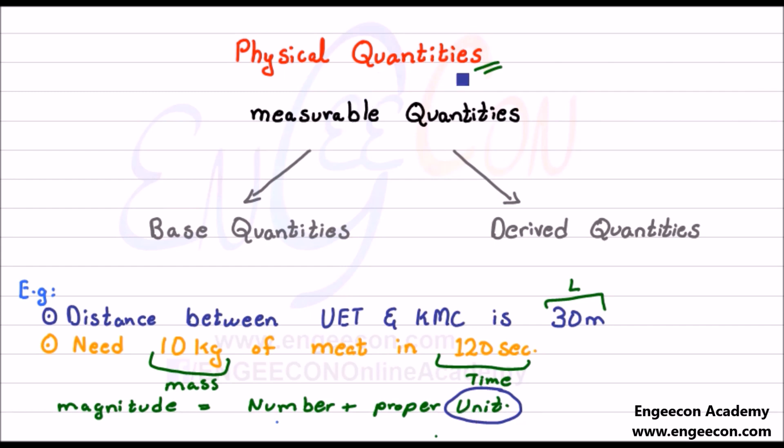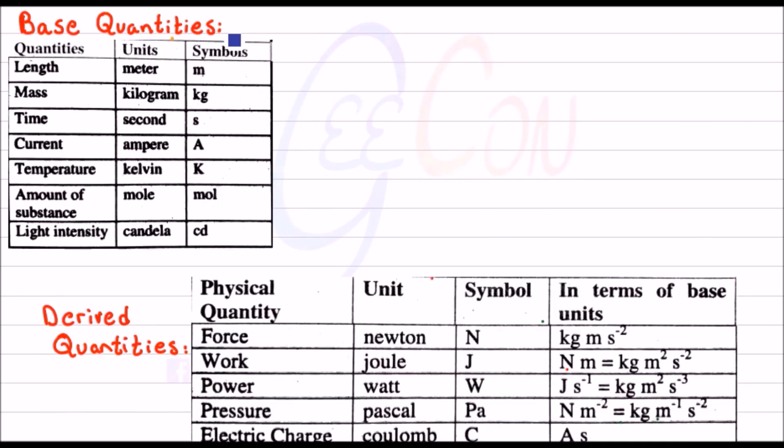Physical quantities are further divided into two categories as base quantities and derived quantities. So let's explain them in detail. Here we have a table of base quantities. You have to memorize this table. Sometimes they ask about these things in entrance examinations.